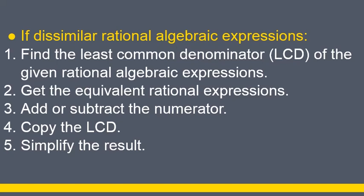If dissimilar rational algebraic expressions, first, find the least common denominator or LCD of the given rational algebraic expressions. Second, get the equivalent rational expression. Third, add or subtract the numerator. Fourth, copy the LCD or least common denominator. And last, simplify the result.